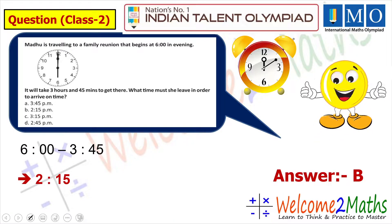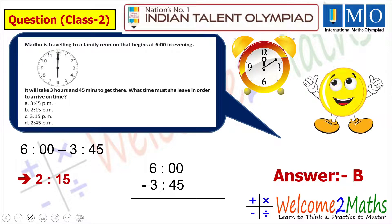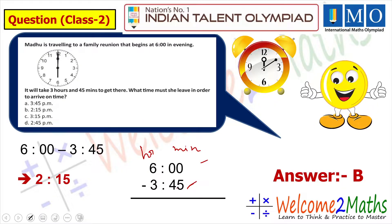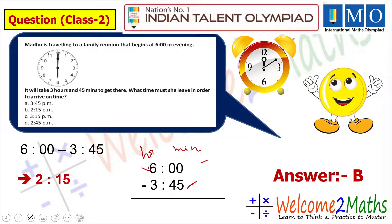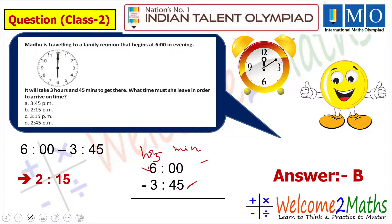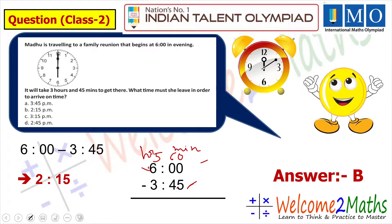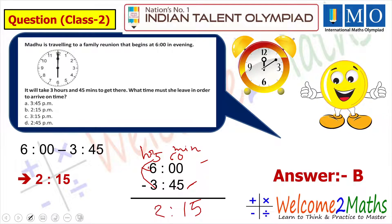Now here is the traditional method. We subtract 3 hours 45 minutes from 6 hours 00 minutes. The right side is minutes and the left side is hours. We need to subtract 45 from 0, but 0 is less than 45, so we borrow 1 hour from the 6, making it 5. One hour equals 60 minutes, so we now have 60 minutes. 60 minus 45 is 15, and 5 minus 3 is 2. The answer is 2 hours 15 minutes — the same 2:15 pm.